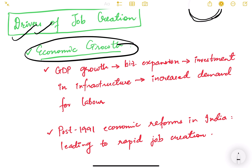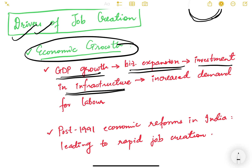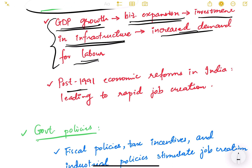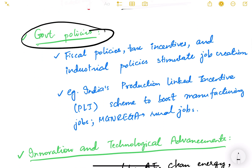Economic growth naturally becomes a driver of job creation. If the GDP is growing, businesses are expanding, meaning more investment will happen in infrastructure. If businesses are expanding, there will obviously be more demand for infrastructure, which means increased demand for labor and more work available. A key example is the post-1991 reforms in India, which led to rapid job creation by increasing economic activity across manufacturing, services, and different sectors.